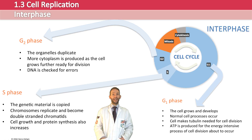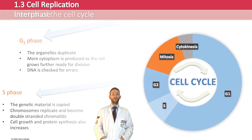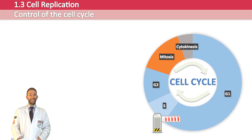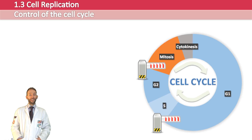It's very important that the cell cycle is controlled very carefully, and also that the DNA is checked for errors — you don't want mutations to occur and be passed on. There are two key checkpoints: one between the G1 and the S phase, just before the DNA gets copied, and the other between the G2 and mitosis phase, when the cell is going to divide. The proteins that control how the cell moves through this cycle are called cyclins.